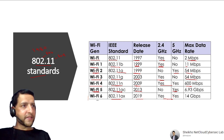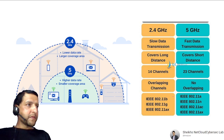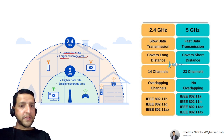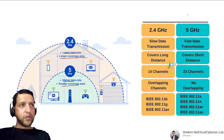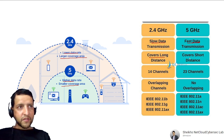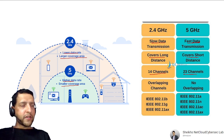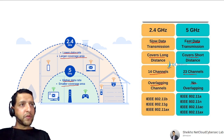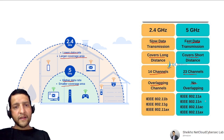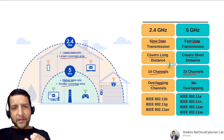The difference between 2.4 GHz and 5 GHz: 2.4 GHz has a lower data rate but larger coverage area, while 5 GHz has a higher data rate but smaller coverage area. 2.4 GHz covers long distances and has 14 channels, but 5 GHz has 23 channels with no overlapping, so less interference. Standards B, G, A, X work at 2.4 GHz; A, N, AC, X work at 5 GHz.